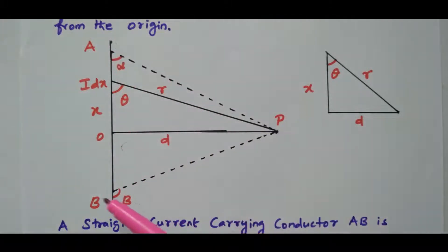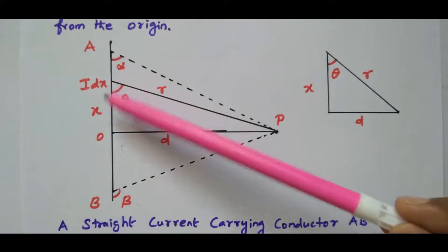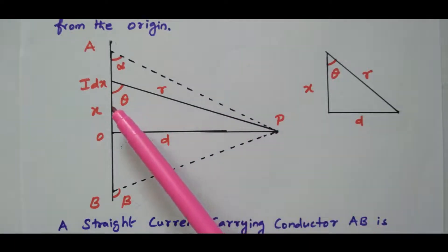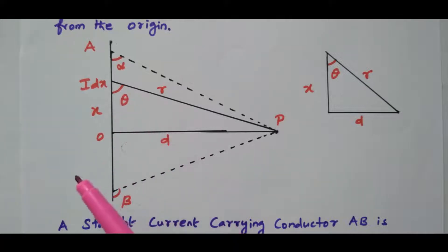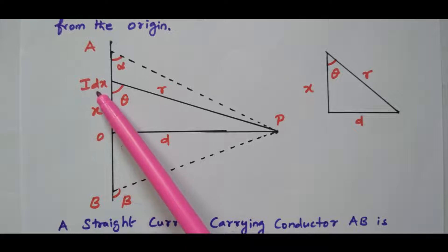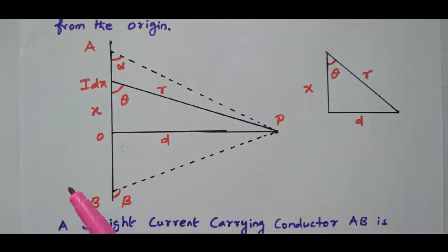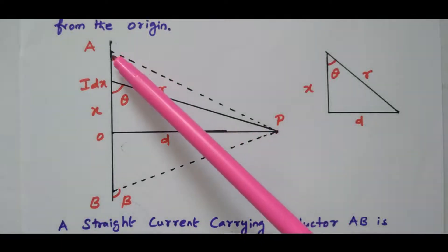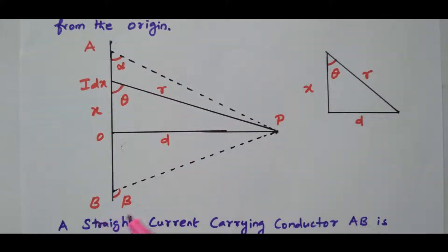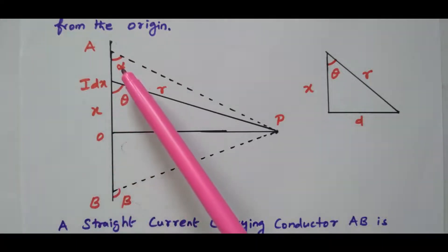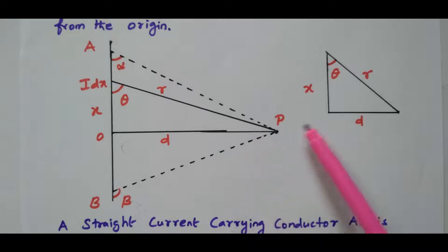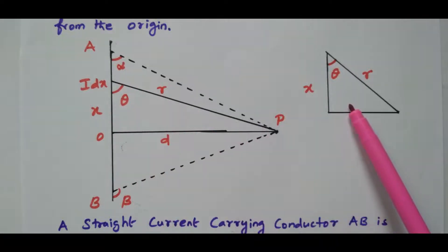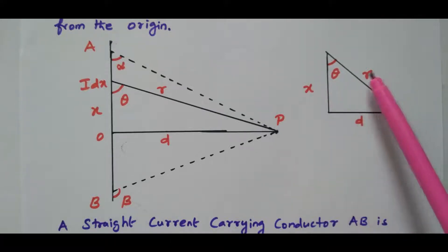This finite conductor is assumed to be having many current elements. We consider one current element idx at this point. There are n number of current elements, and we are considering one current element idx at a distance x meters from the origin. The angle at that point will be theta. The angle between point P and A is alpha, and point P and B is beta. The length AB has equivalent angles alpha and beta. For the calculation, we need this triangle, which is drawn separately. The distances are d, x, and r, and the angle is theta.